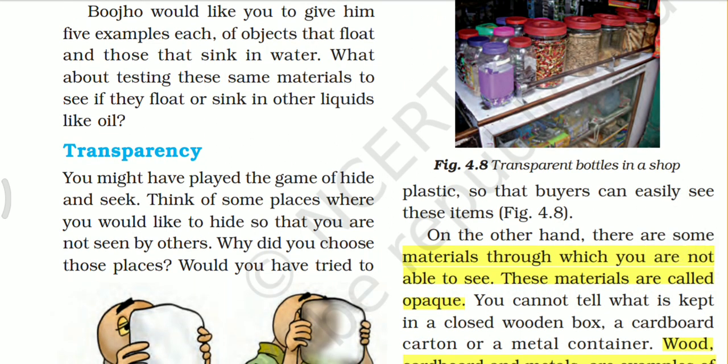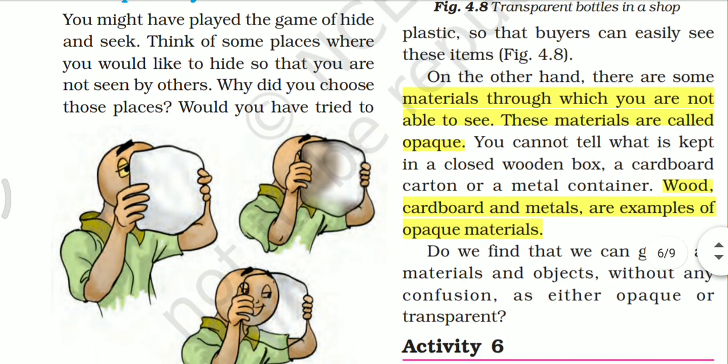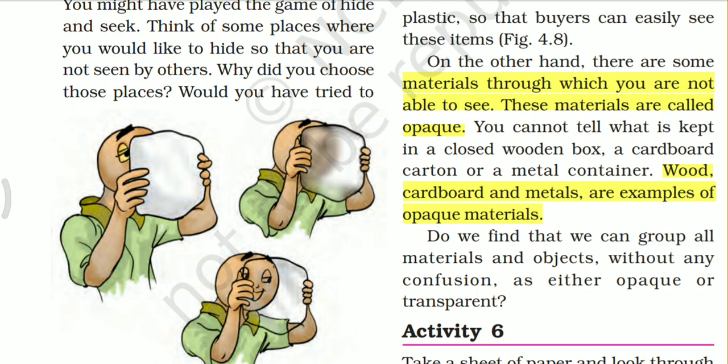As you can see in Figure 4.8, a transparent bottle in a shop — you can clearly see the material present inside. On the other hand, there are some materials through which you are not able to see. These materials are called opaque.